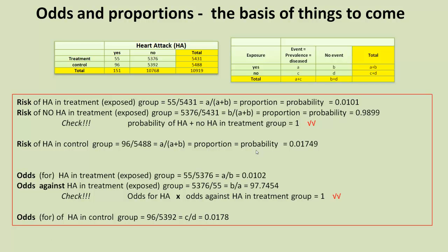And we consider also the odds for a heart attack in the control group, which again, just those two values in cells C and D, which is 0.0178, just below 2%.